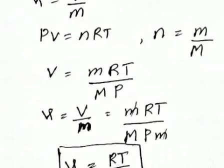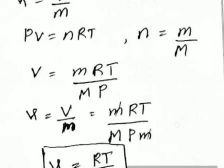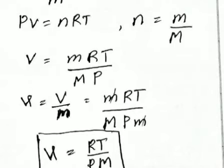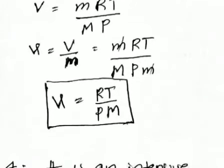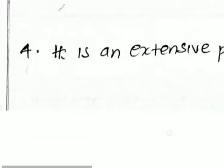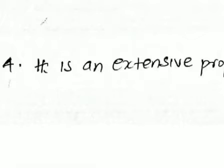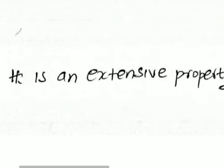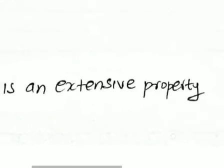We know that specific volume v (small v) equals V (capital V) divided by m. Substituting and canceling small m, we get the specific volume: v = RT / (M × P), where M is the molecular mass.